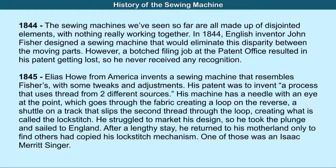In 1844, the sewing machines seen so far were all made of disjoined elements with nothing really working together. In 1844, English inventor John Fisher designed a sewing machine that would eliminate this disparity between the moving parts. However, a botched filing at the patent office caused complications.